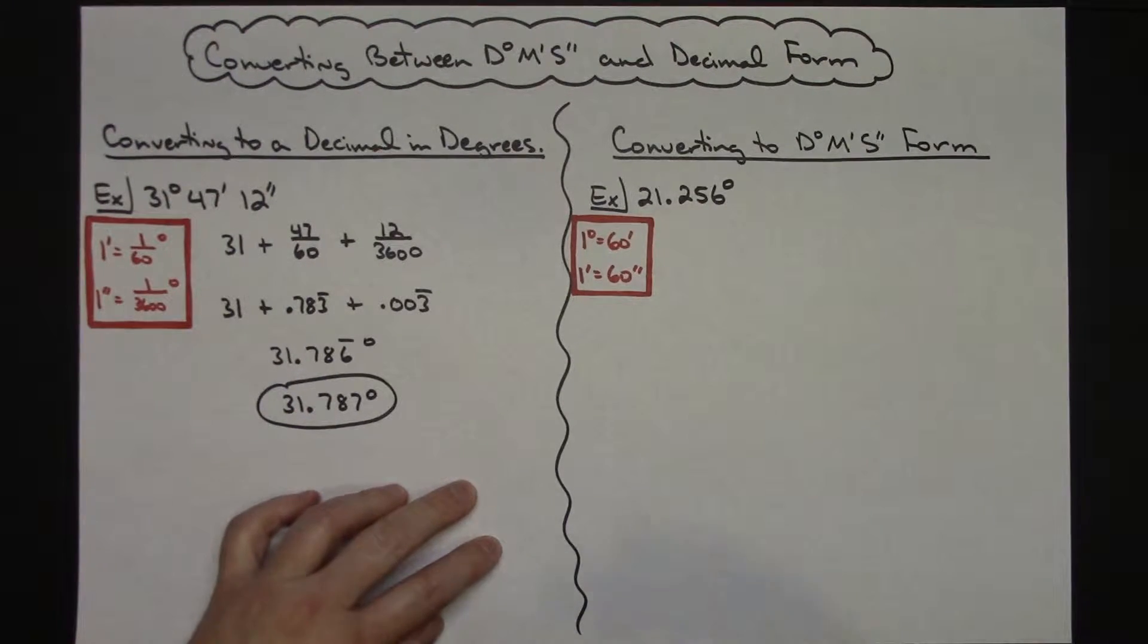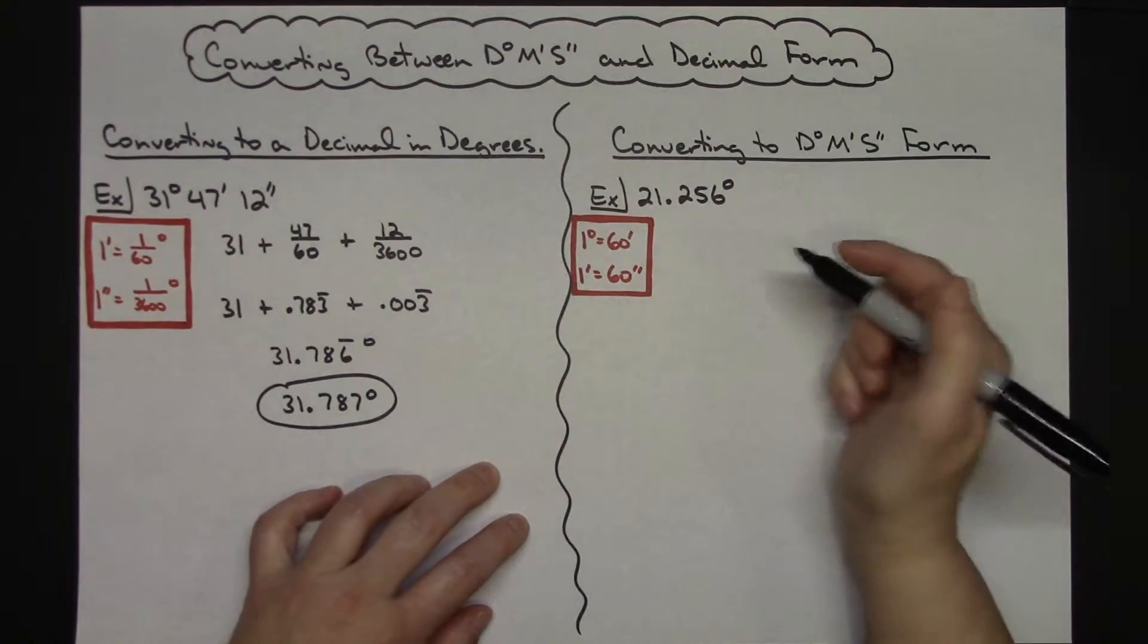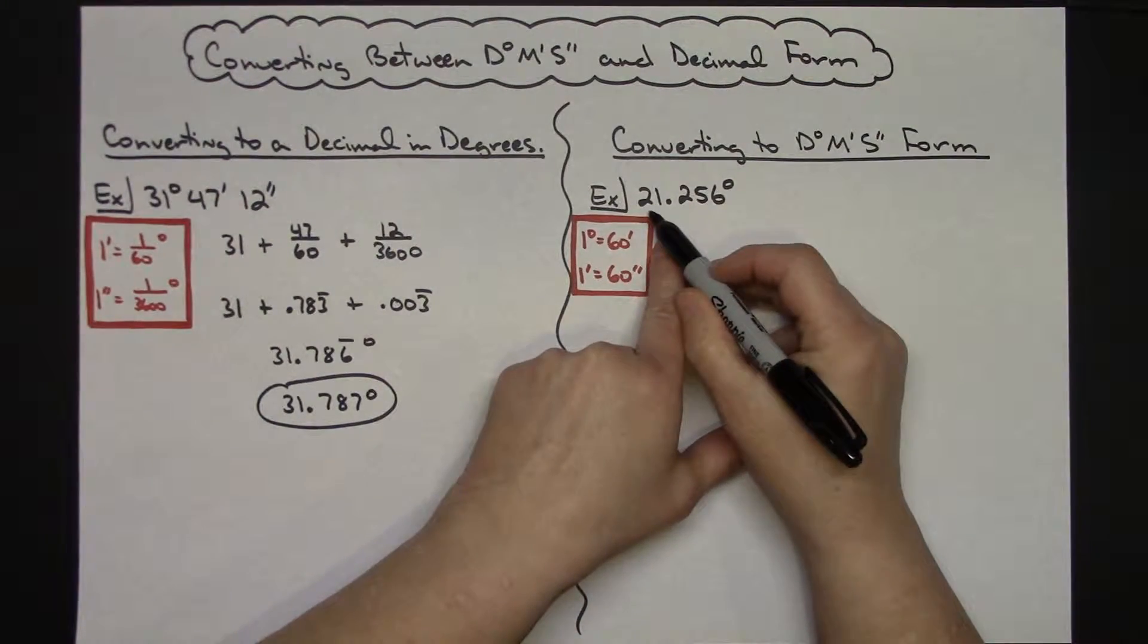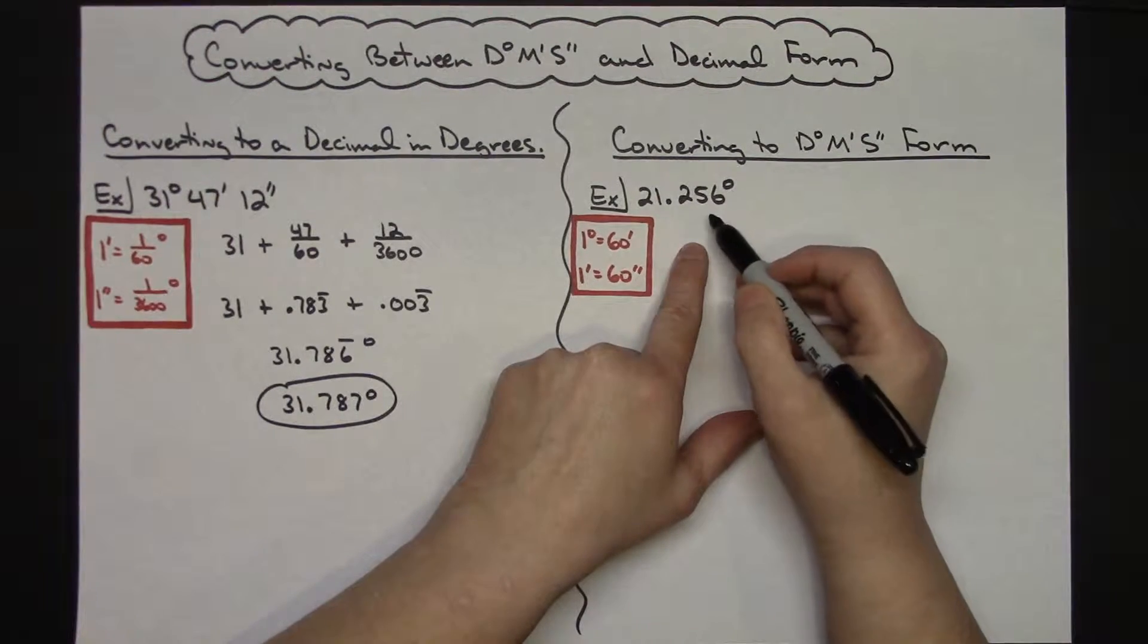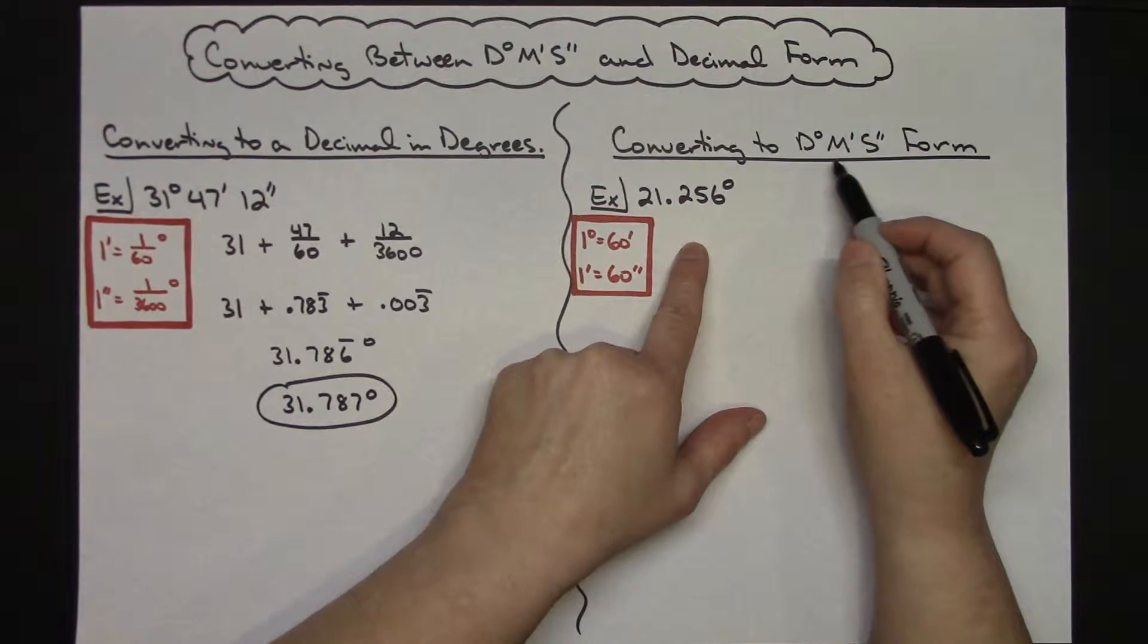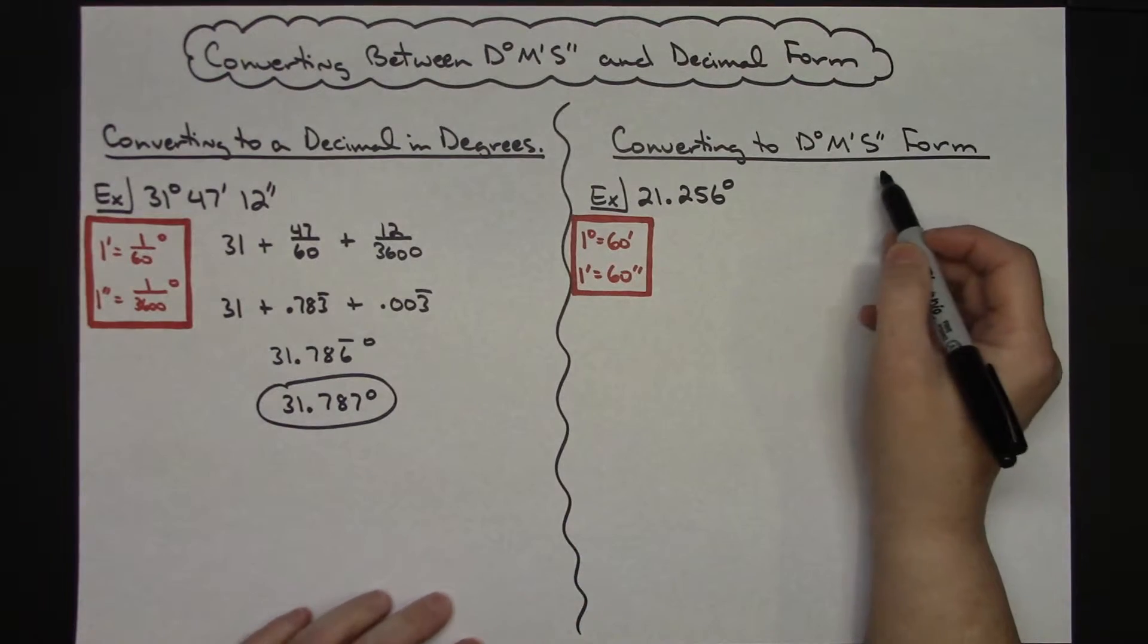Now it's often common to then have to go backwards the other way. Let's say I've got some great big long decimal here in degrees but I want to convert it into degrees, minutes, and seconds. I want to know how many minutes and how many seconds I have.